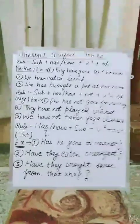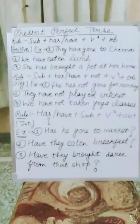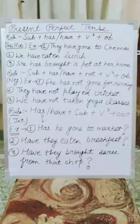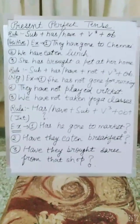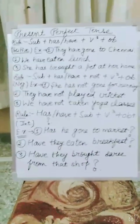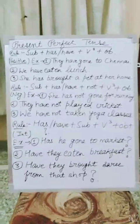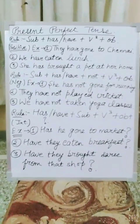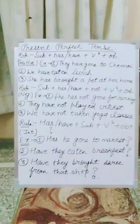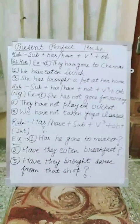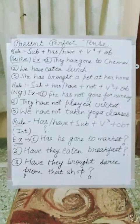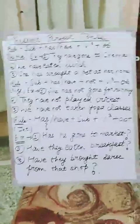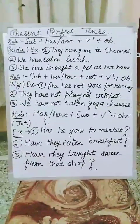Hey everyone, I'm back with a new video and today we will discuss present perfect tense, as you can see on this board. Since we've already completed continuous tense and simple present, let's have a look at this third category: present perfect tense. Its rule is subject plus has/have plus verb's third form plus object in case of positive. Let's have some examples — the first is: 'They have gone to Chennai.'